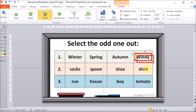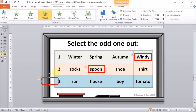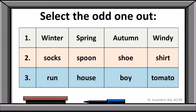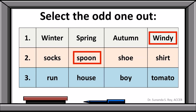Again, press Ctrl+D to duplicate the frame. For the second question — socks, spoon, shoe, shirt — the odd one out is 'spoon' because the others are things you wear. For the third — run, house, boy, tomato — 'run' is the odd one out because it's a verb while the others are nouns. In the slideshow, students answer and you click to reveal: 'windy', then 'spoon', then 'run'.